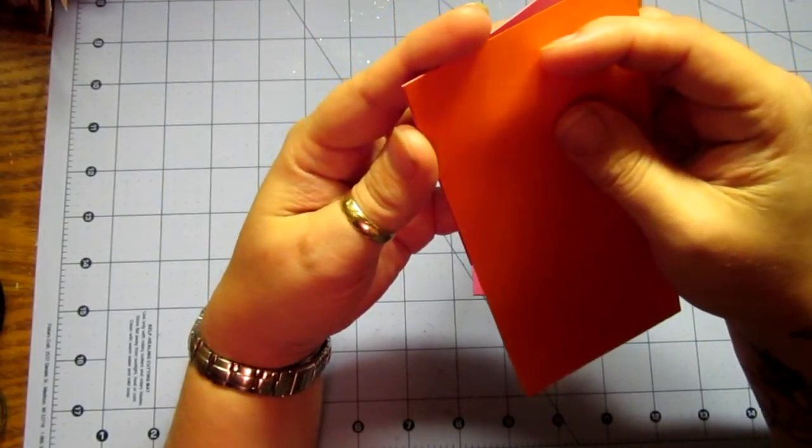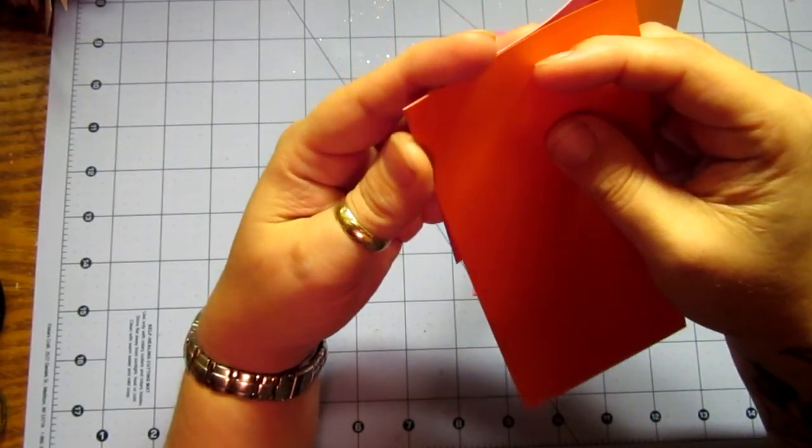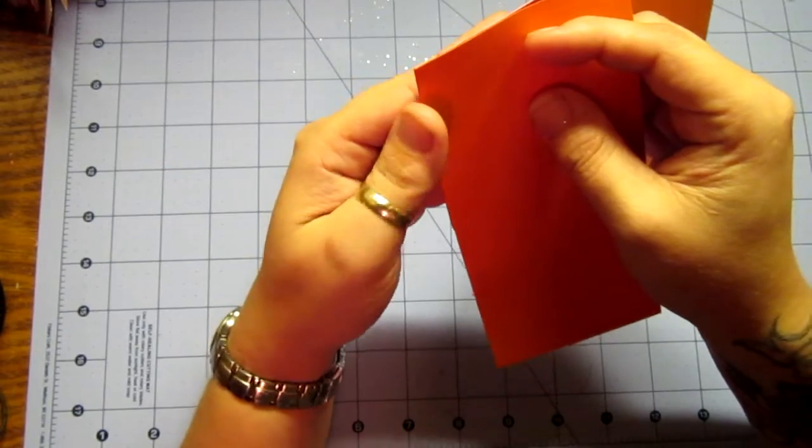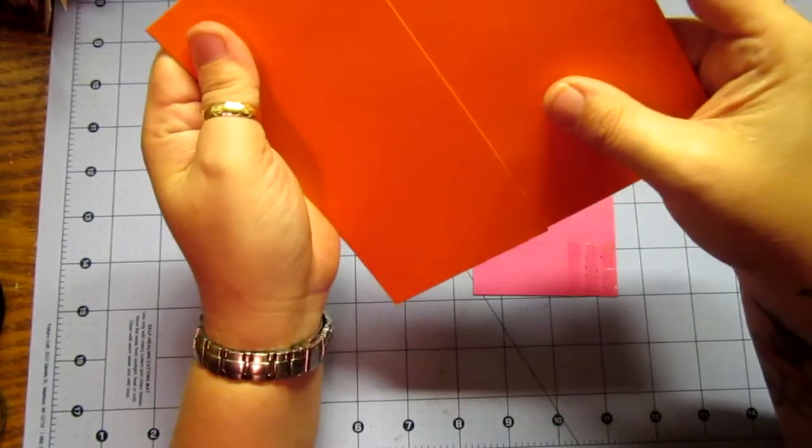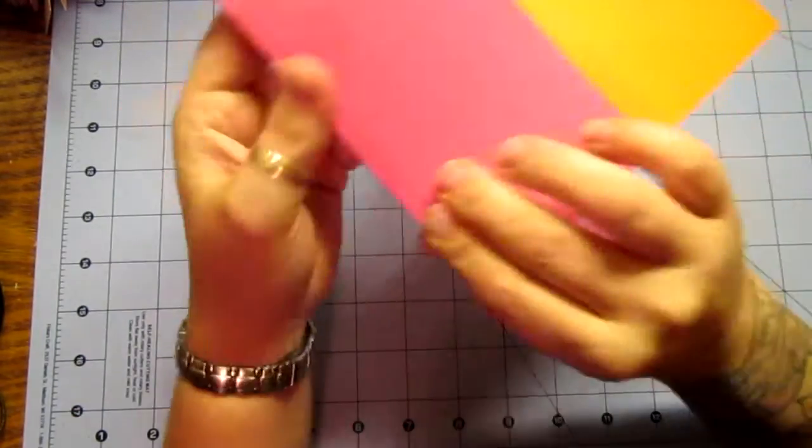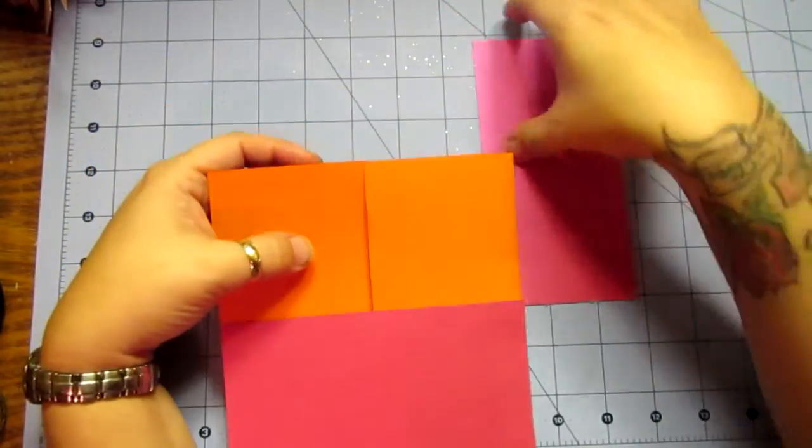And then you've got one corner together. It's almost like putting a puzzle piece together. And I'm going to do the same thing to this corner. I have found, so that you get the exact corners, it's easier this way.